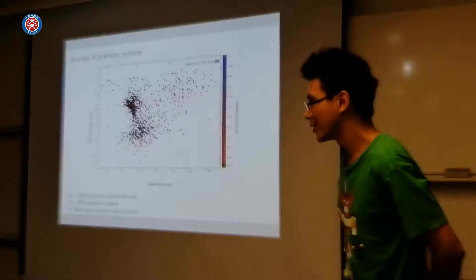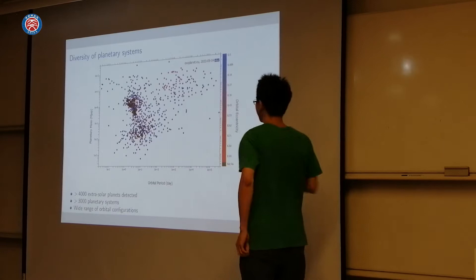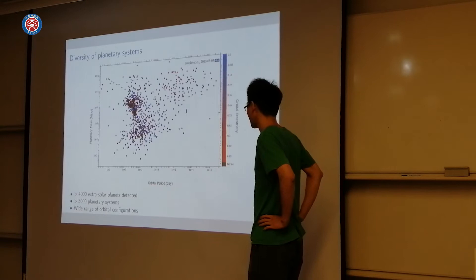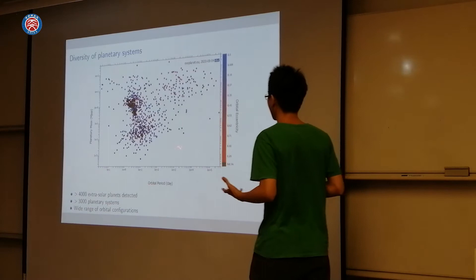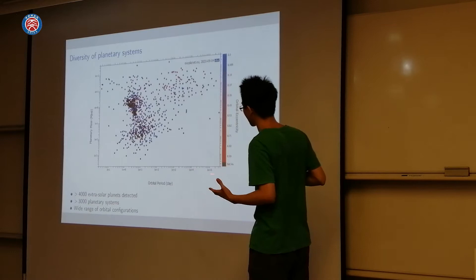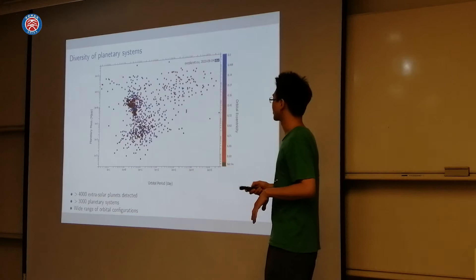I'm surprised that nobody showed this figure yet. This is a summary of all the known exoplanets that have been discovered so far, updated only two days ago. The point of this figure is to show that there's a huge diversity in the exoplanet population we've observed. The horizontal axis shows the orbital period of the planet, the vertical axis is the mass of the planet, and color is the orbital eccentricity. As you see, the exoplanet population occupies a huge parameter space.